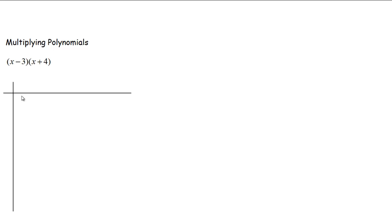Today we're going to multiply polynomials. 'Poly' means many, so a polynomial has many terms. This right here is a polynomial, and so is this. To be more specific, this is a binomial — one, two terms — and so is this one. So today we're going to multiply a binomial times a binomial.